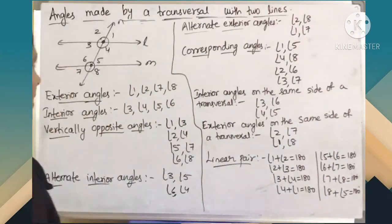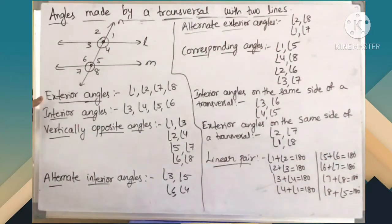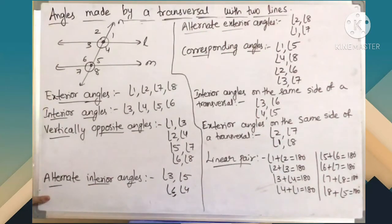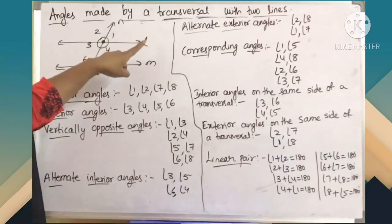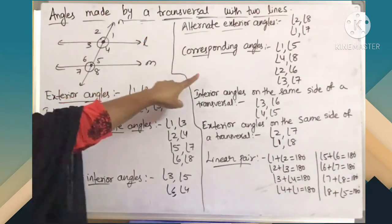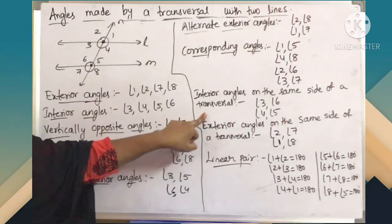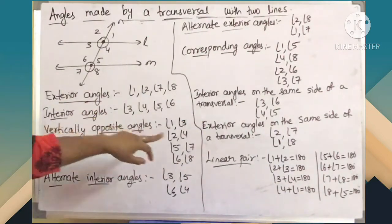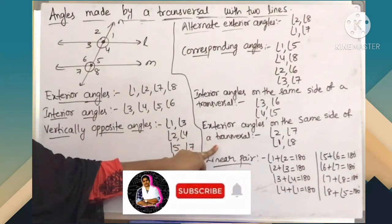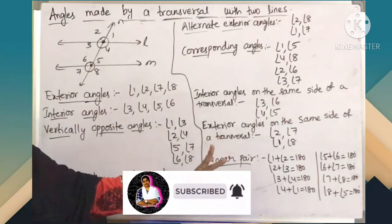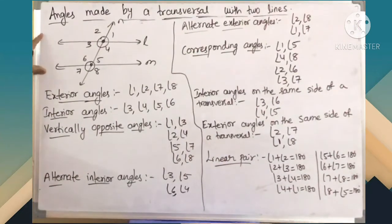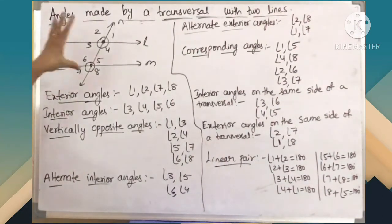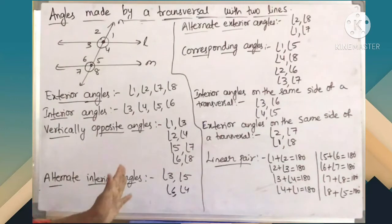So finally, these are the angles made by a transversal with the 2 lines, children. We get 4 exterior angles, 4 interior angles, 4 pairs of vertically opposite angles, 2 pairs of alternate interior angles, 2 pairs of alternate exterior angles, 4 pairs of corresponding angles, 2 pairs of interior angles on the same side of the transversal, 2 pairs of exterior angles on the same side of the transversal, and 8 pairs of linear pair. When you get a question, they will give one diagram and mark angles as 1, 2, 3, 4 or A, B, C, D and ask you to write all the angles made by the transversal.